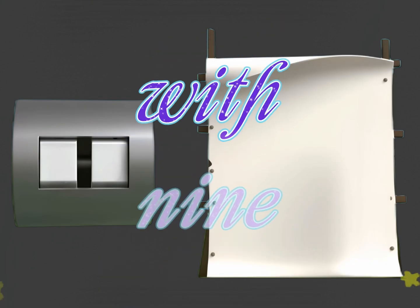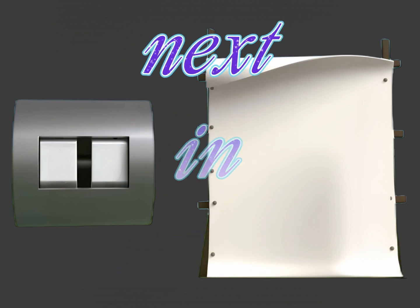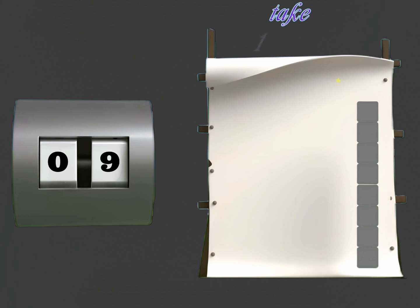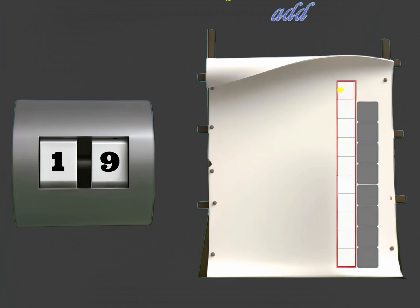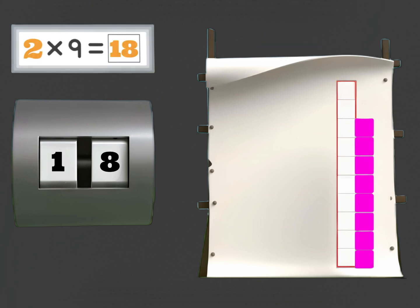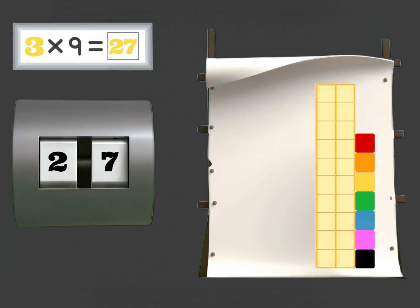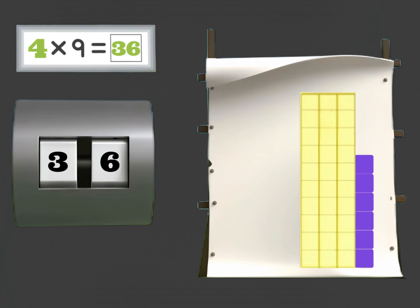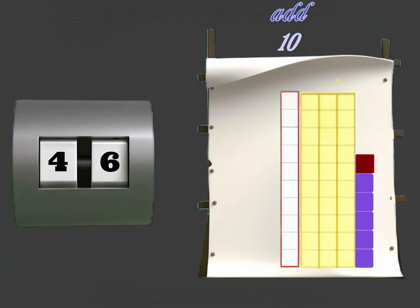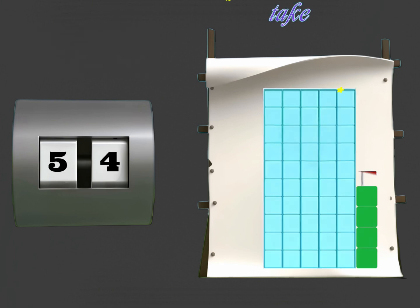And here's a trick with nine — a number game to play, to see who's next in line. Add ten and take one away. Five times nine is forty-five. Add ten and take one away.